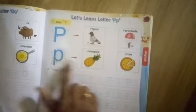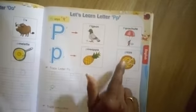Next letter P. P for pigeon, P for parachute, P for pineapple, P for pizza. Capital letter P trace. Next, small letter. Here, pear, pillow, pig. Dots join color here.